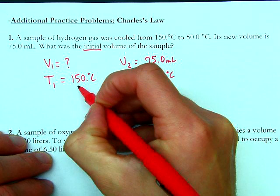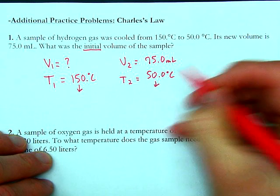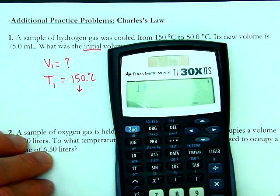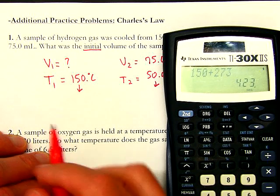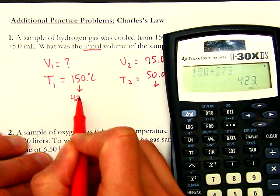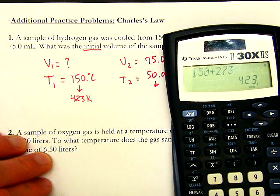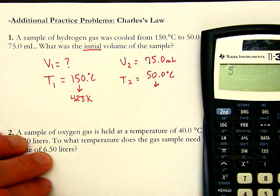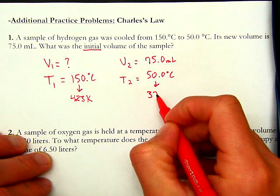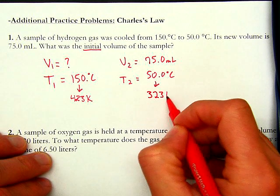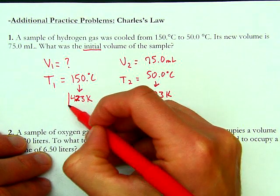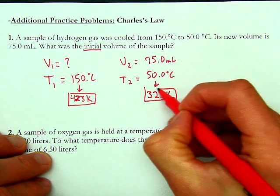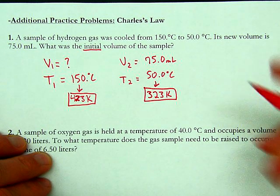T1 was 150 degrees Celsius, V2 is 75 milliliters, and T2 is 50 degrees Celsius. We need to convert these into Kelvin. So 150 plus 273 gives us 423 Kelvin. And 50 plus 273 gives us 323 Kelvin. These are the temperatures we're going to use, and now we'll plug them into the Charles' Law equation.